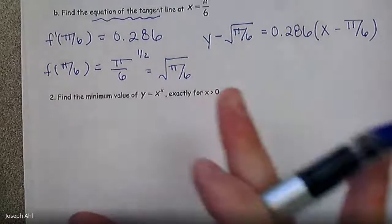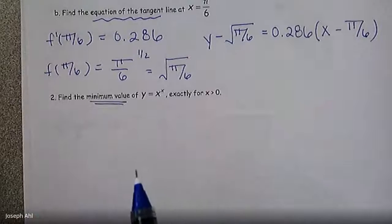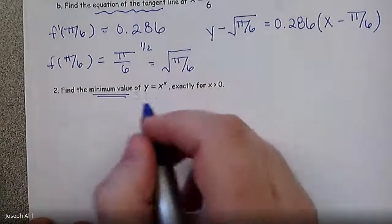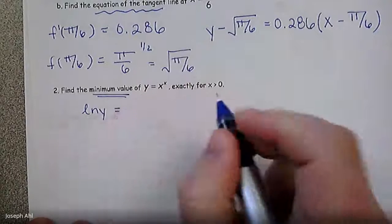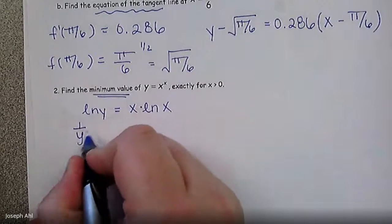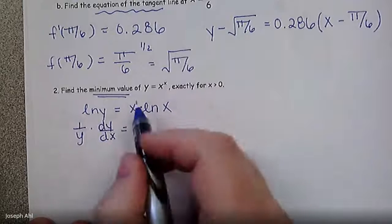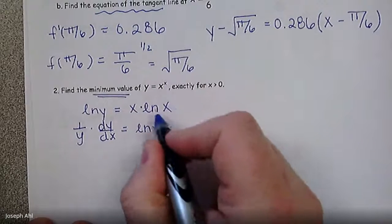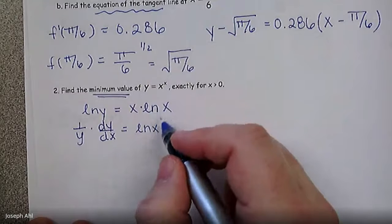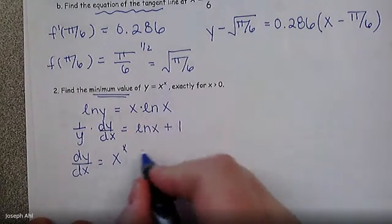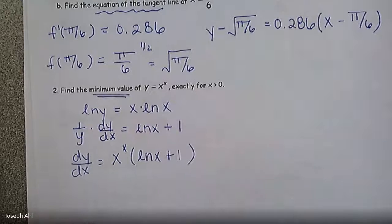This next problem, also bringing us back to the beginning of the year, asks us to find the minimum value of y equals x to the x exactly for x greater than zero. To find the min, we'll find the derivative. Taking the natural log of both sides: ln y equals x times ln x. Taking the derivative of the left — done that a few times — and product rule on the right gives 1 over y times dy/dx equals ln x plus one. Multiplying y back gives the derivative as x to the x times the quantity ln x plus one.